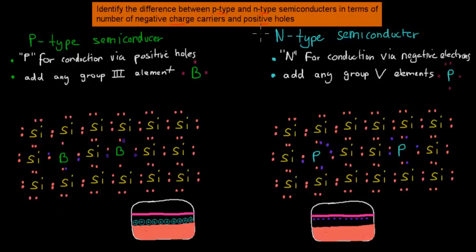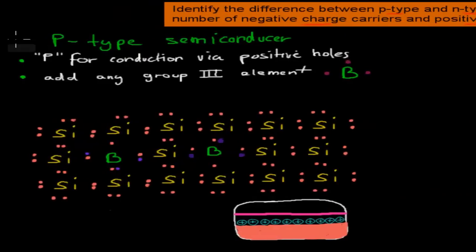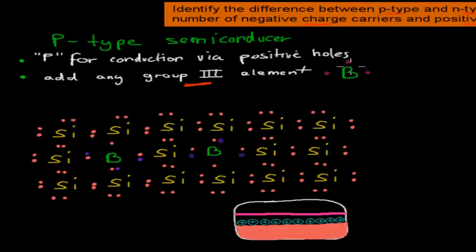I'll quickly recap again what P-type and N-type semiconductors were. The P-type semiconductor was a conductor which had its normal silicon or germanium, plus it had any group 3 element added to it. For example, boron would be one of them. In this case, P stands for conduction via positive holes.